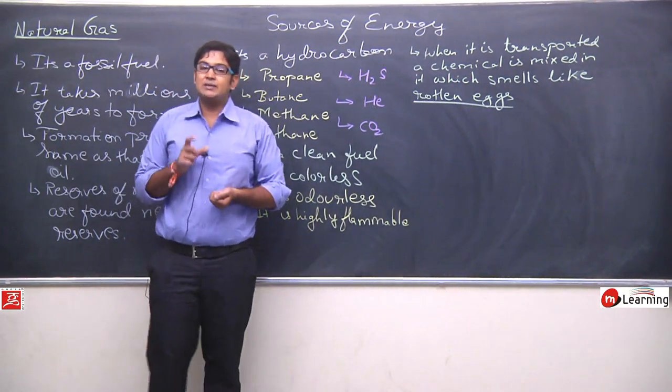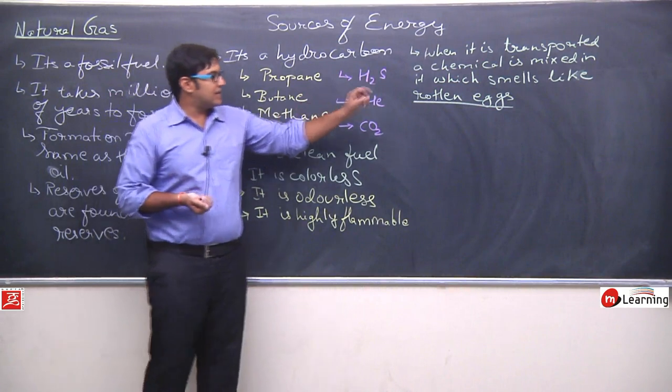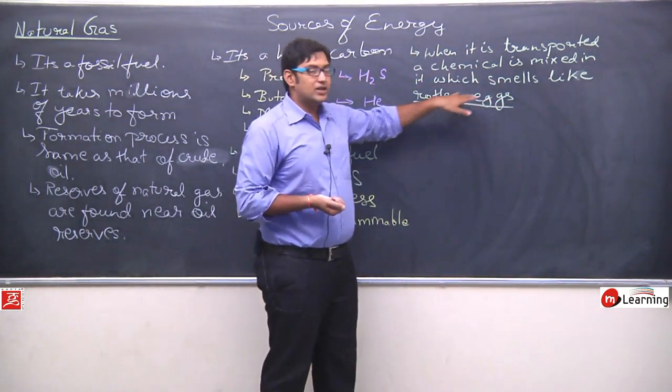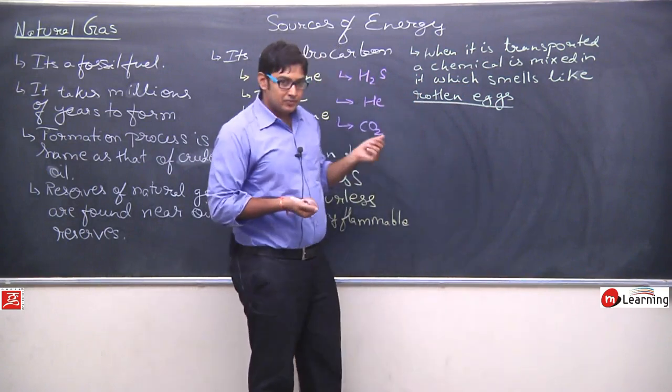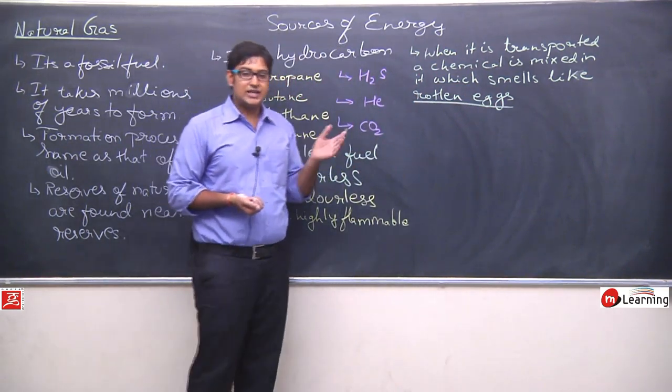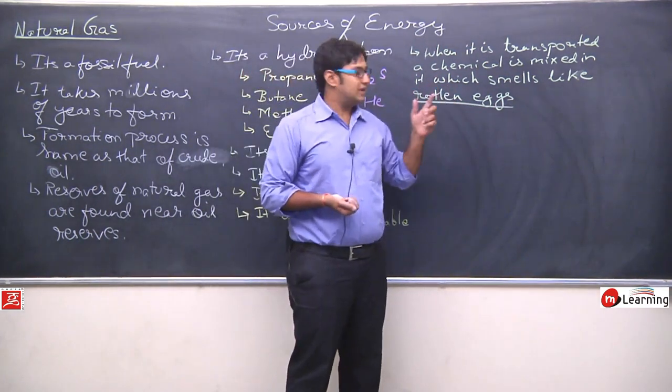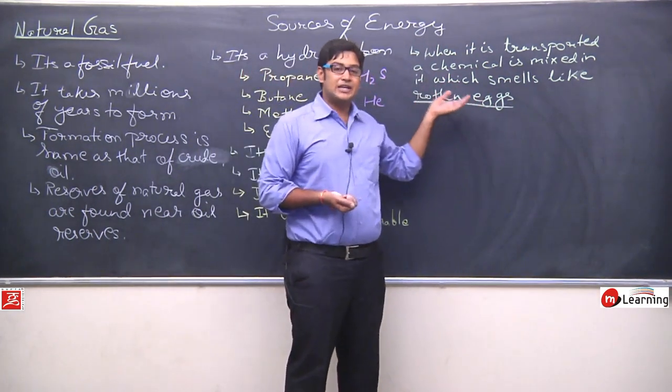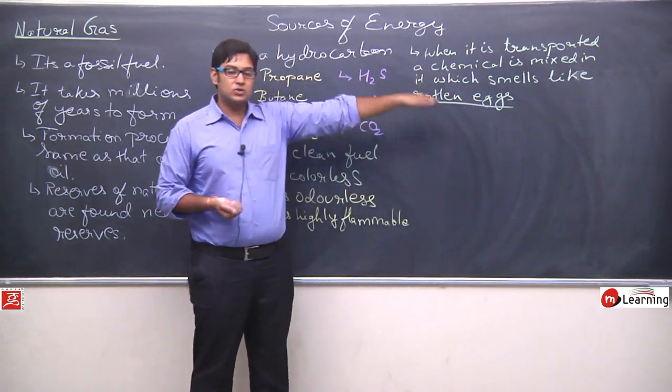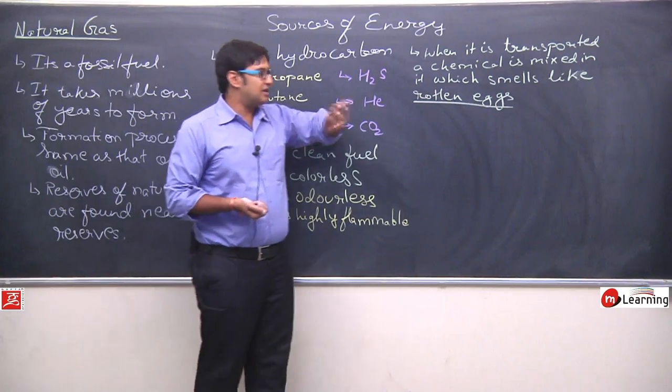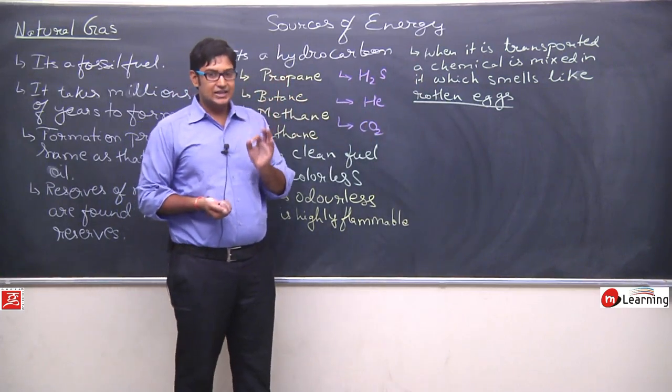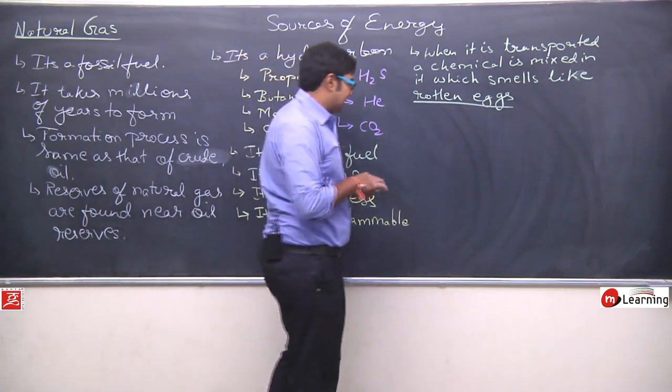Natural gas will leak, but it's colorless, and odorless, and highly flammable. We won't even know that natural gas is leaking, and if there's a spark somewhere accidentally, there will be a blast. That's why to prevent such problems, what we do is, we mix a chemical in it. And that chemical gives the smell of rotten eggs, and because of that, whenever natural gas leaks, we come to know that yes, natural gas is leaking. So in this way, natural gas is transported and its prevention is done through this chemical.